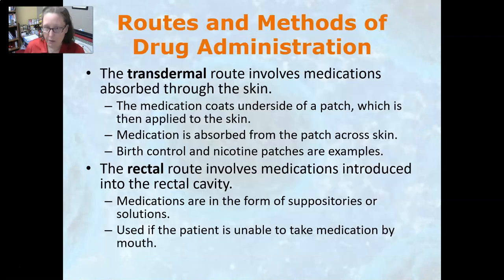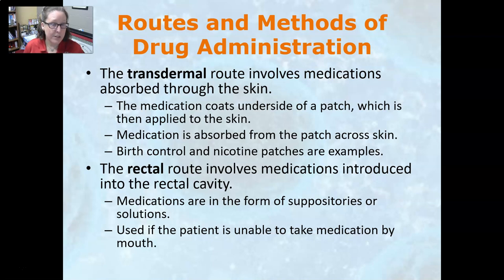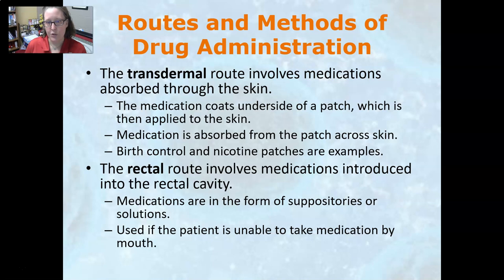The transdermal route involves medications that are absorbed through the skin. The medication is often coated on the underside of a patch, which is then applied to the skin. Nicotine patches for smoking cessation are an example, as are some birth control medications in patch form. The medication is slowly absorbed from the patch across the skin over time, and you typically need to rotate the location of the patch each time you switch it out.